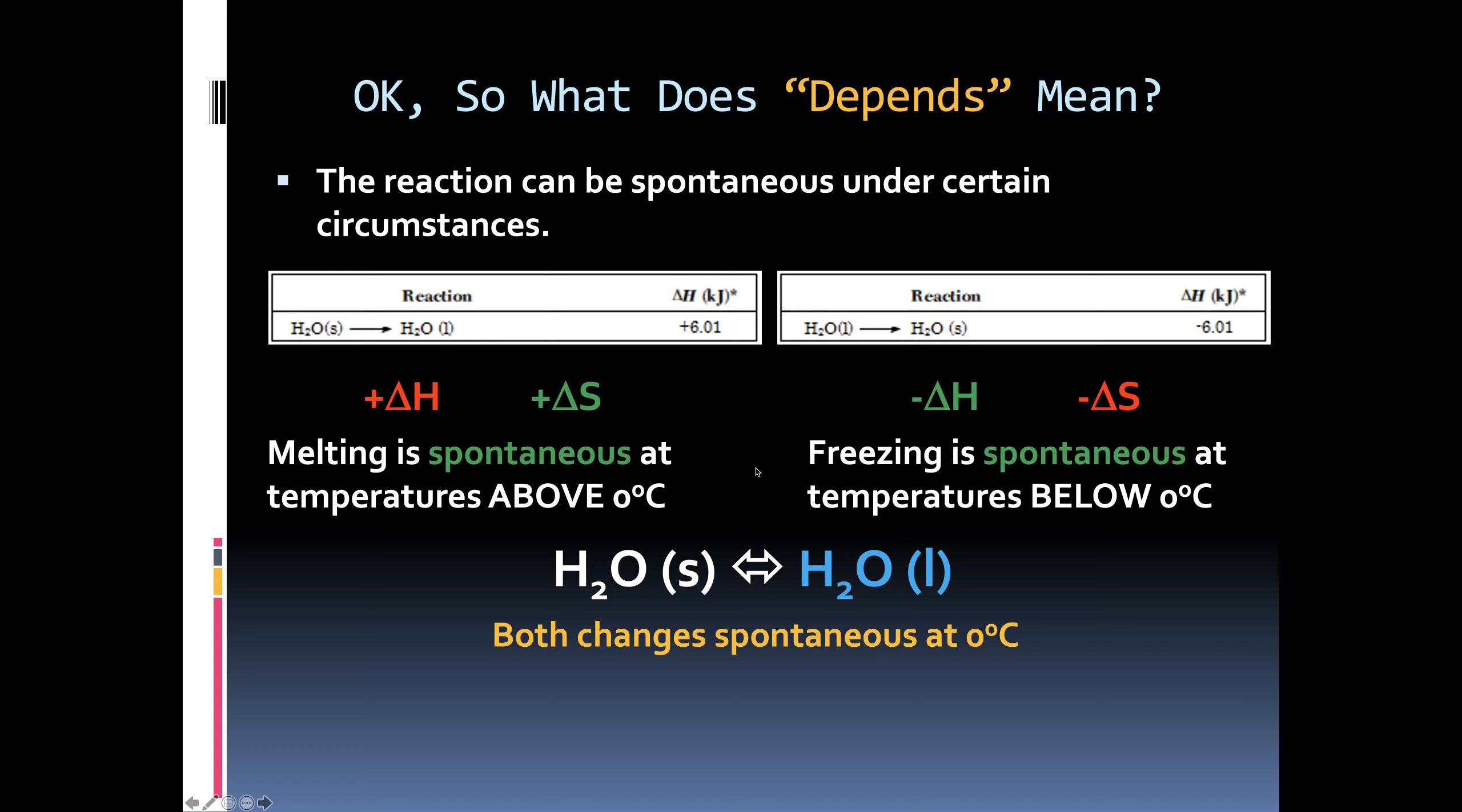So, above the temperature, the forward change is spontaneous. But below that temperature, the reverse change is spontaneous. At zero, both changes occur at the same rate. Which is why it's called equilibrium.